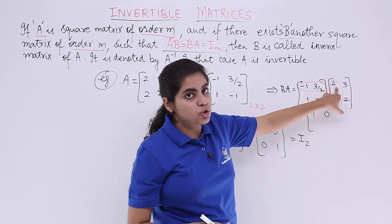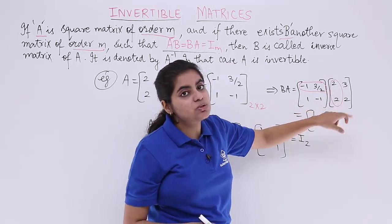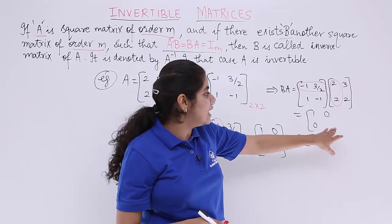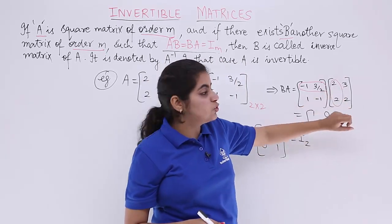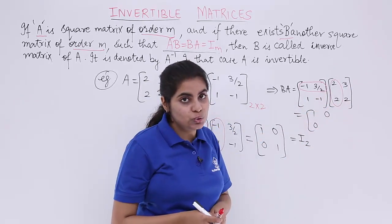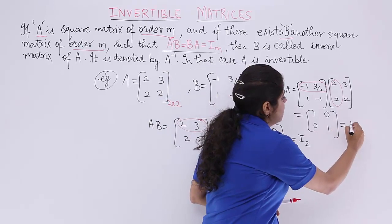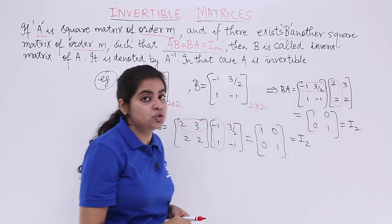Next, 1 into 2, 2. Minus 1 into 2, minus 2, 2 minus 2 is 0. Last but not the least, we are left with the last element. 1 into 3, 3 minus 1 into 2, 2, so 3 minus 2 is 1. Again, you find it as 1, 0, 0, 1 which is I2.